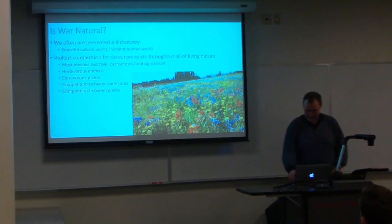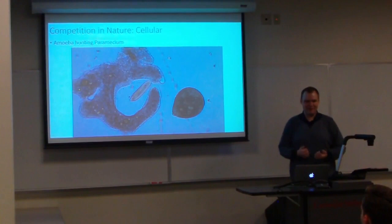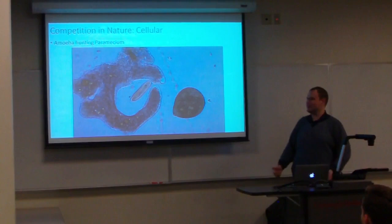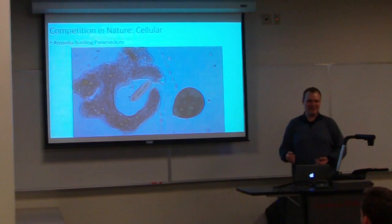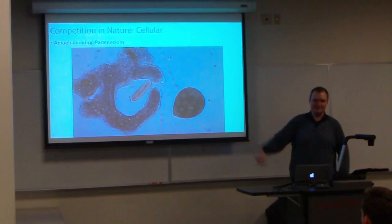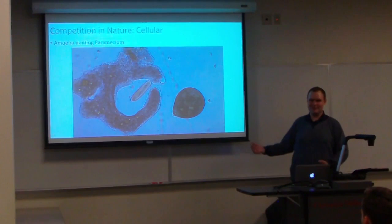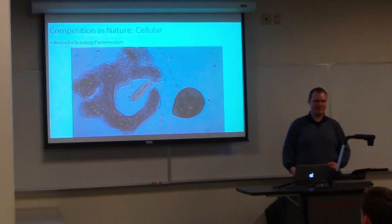If we look at the scale of competition in the natural and human world, we can start at the cellular level — and even there, competition is often fairly violent over resources. A common example is an amoeba hunting and eating a paramecium. In this picture, the small green thing is the paramecium and everything else is the amoeba. These are just single cells, but they're still killing each other over resources — in this case, whatever the paramecium contains, which is food for the amoeba.